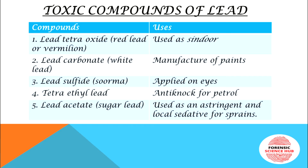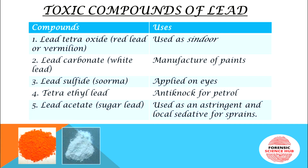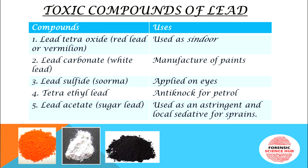The toxic compounds of lead: with oxygen, lead forms lead tetraoxide, which is red in colour and is also called red lead or vermilion — it is used as sindoor, applied on the forehead by Indian women as a sign of marriage. Next is lead carbonate, which is white in colour and is used in the manufacture of paints. Lead sulphide, or stibnite, is black in colour and is applied on the eyes. Tetraethyl lead is used as an anti-knocking agent for petrol.